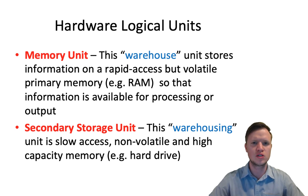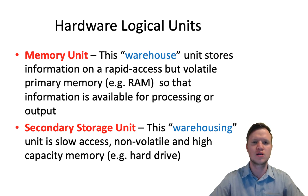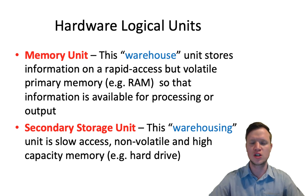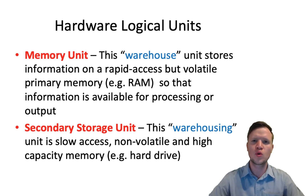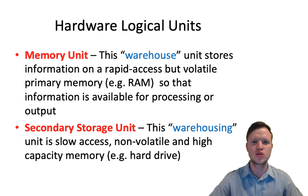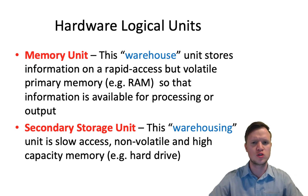Then we can move to secondary storage. Secondary storage is our warehousing — it's a little bit slower, but the key thing is it's non-volatile, meaning if the power goes off, the data or information stored stays intact. So memory unit is volatile, secondary storage is non-volatile. The memory unit we refer to as RAM, and secondary storage we refer to as the hard drive, but it can also be CD-ROMs and USB sticks.